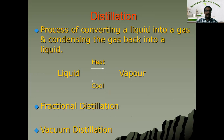Another method used in the laboratory is distillation. Distillation is a process of converting a liquid into gas and condensing the gas back to liquid. There are two processes involved: evaporation and condensation. Liquid, when heat is applied, converts into vapor; then the vapor is cooled and comes back to liquid. That is simple distillation.